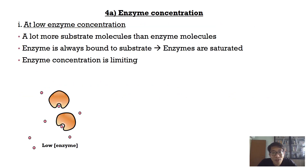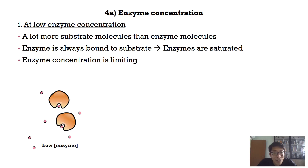We will look at enzyme concentration first. At low enzyme concentration, there are a lot more substrate molecules than enzyme molecules, so the enzyme is always bound with substrates. This is known as enzyme saturation — the enzymes are already working at maximum rate. At any one time they are bound to substrate, the reaction occurs, products leave, and another substrate binds, because there is so much more substrate than enzymes. So enzyme concentration is the limiting factor when it is low.